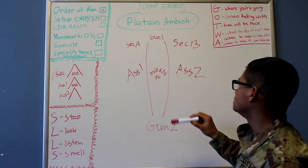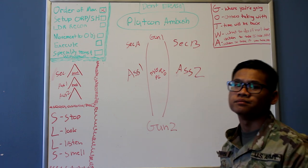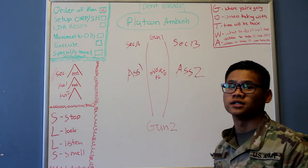Once the squad leaders get everything situated, they're going to meet in the middle with the PSG, RTO, and the PL. And that will be your ORP cigar shape.